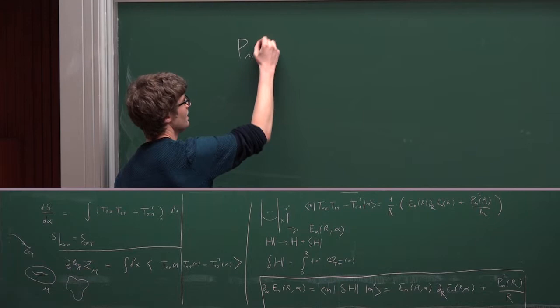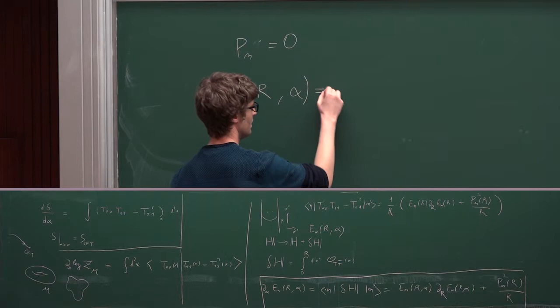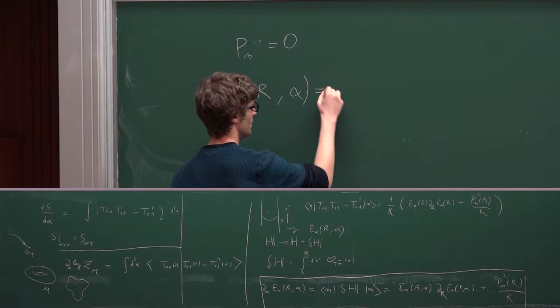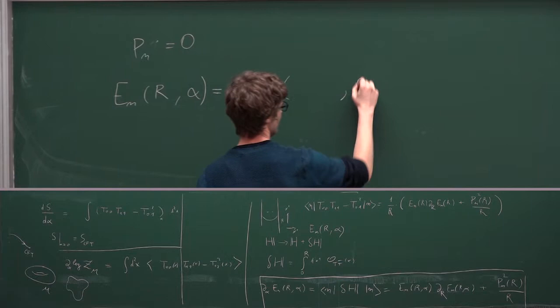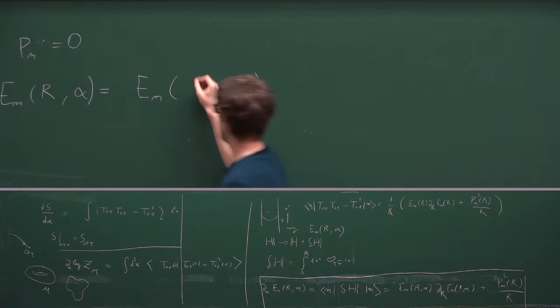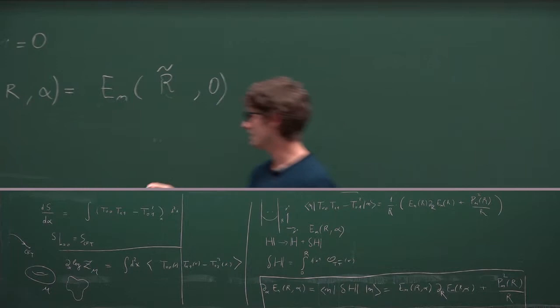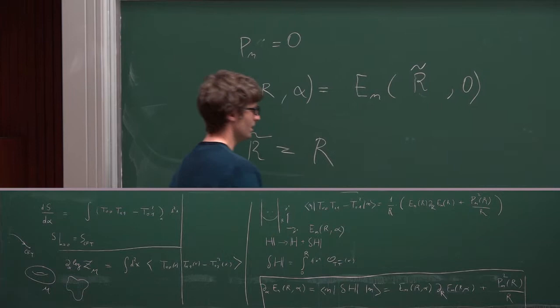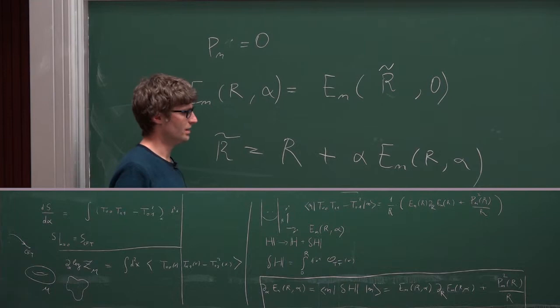Then you get, there is an implicit solution, where essentially you just need to evaluate your original energy levels, but at a different value of R that depends on alpha. And so this R tilde is defined non-linearly in this way. So it's very non-linear, because it contains already the solution.